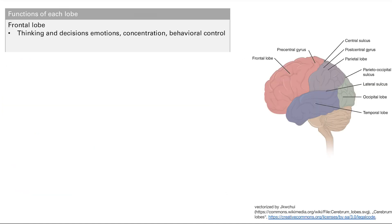All right, now we're going to go into functions of each lobe. First is the frontal lobe. This is all higher-level thinking functions. The frontal lobe is most important—it's thinking and decisions, emotions, concentration, and behavioral control. Oftentimes you'll see a patient who just goes out of control with behavior. They become very sexually unrestrained or they just spend a lot. That's because they got damaged in the frontal lobe.